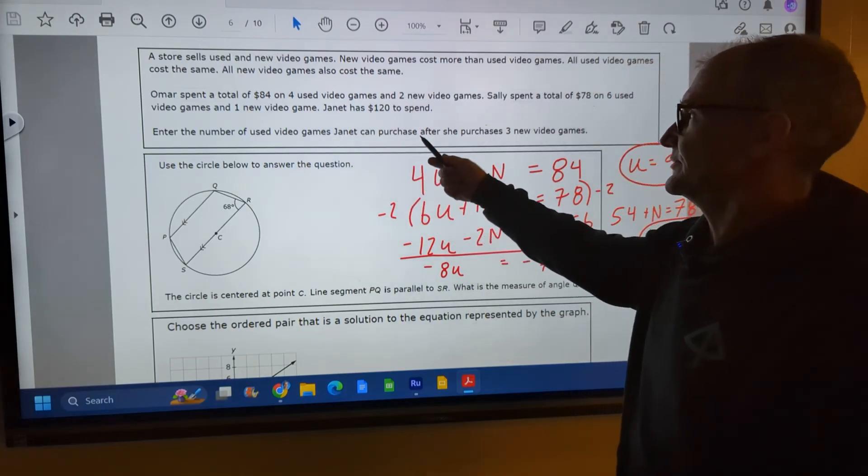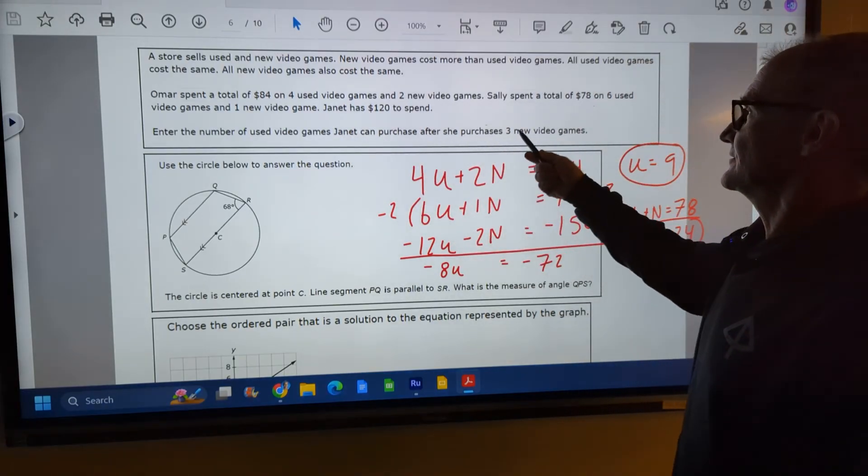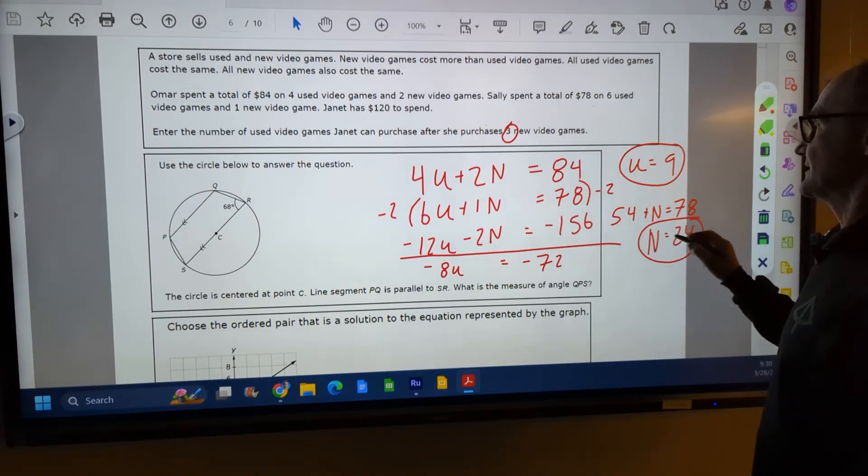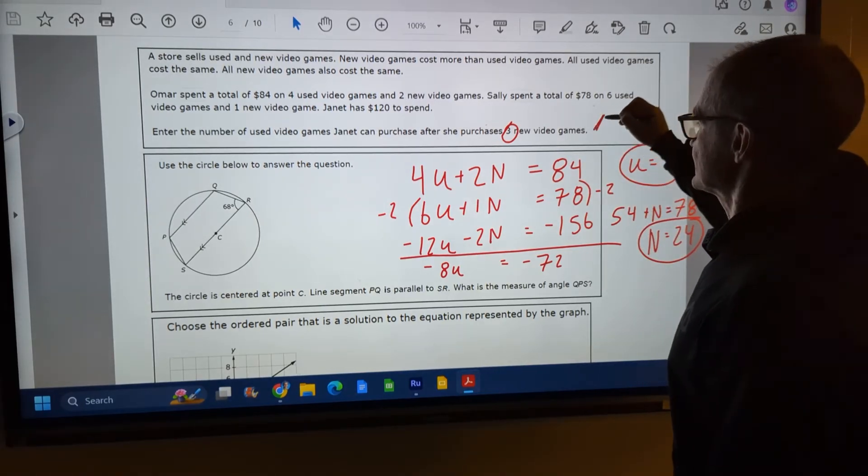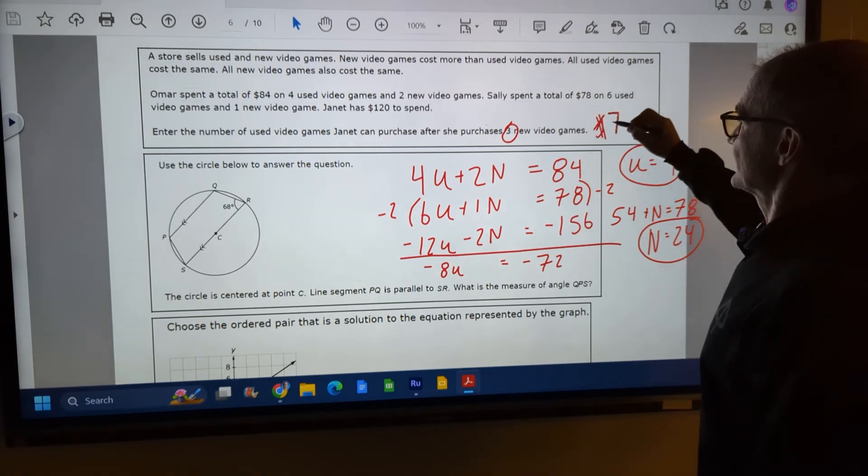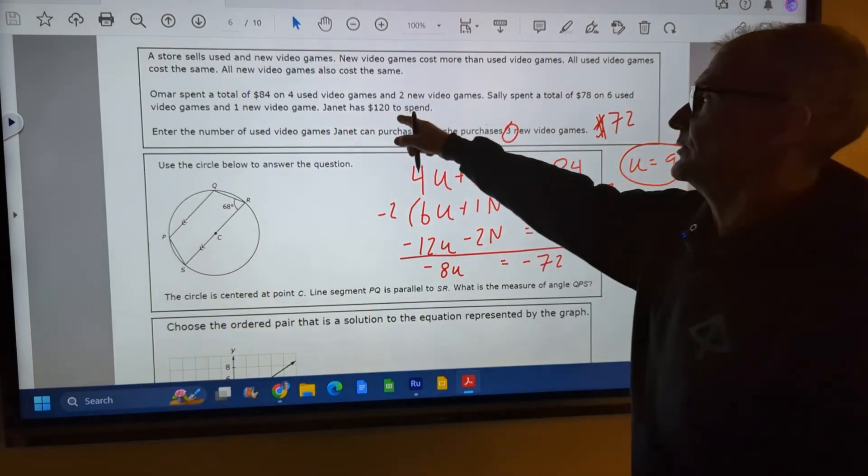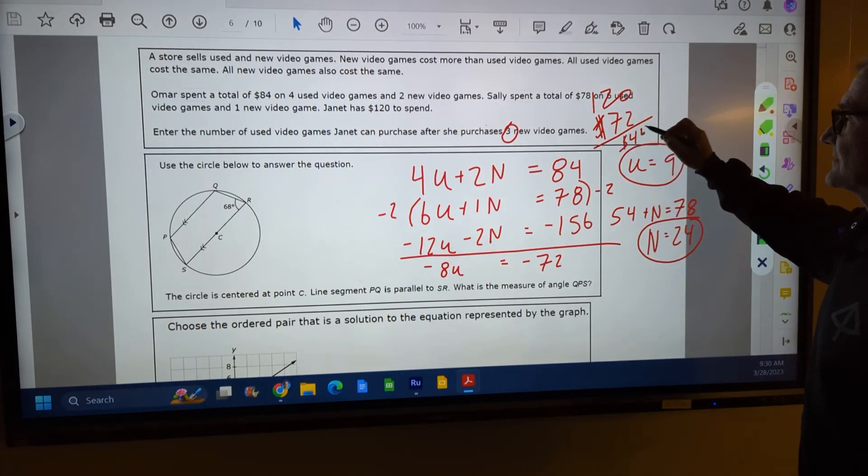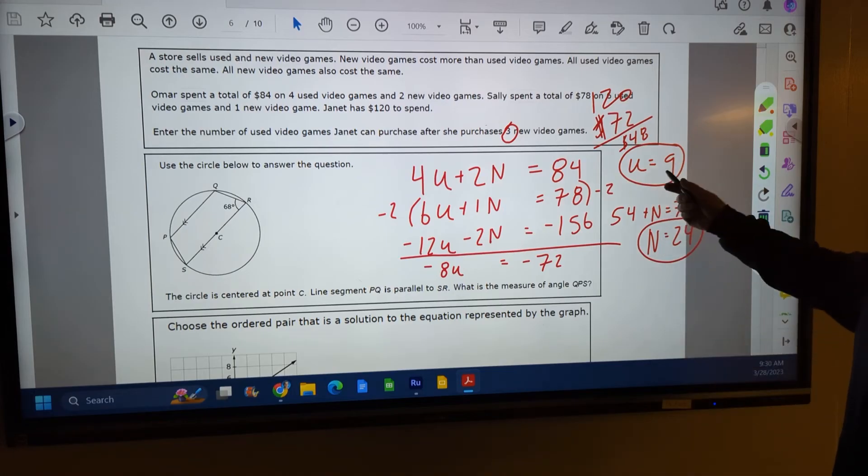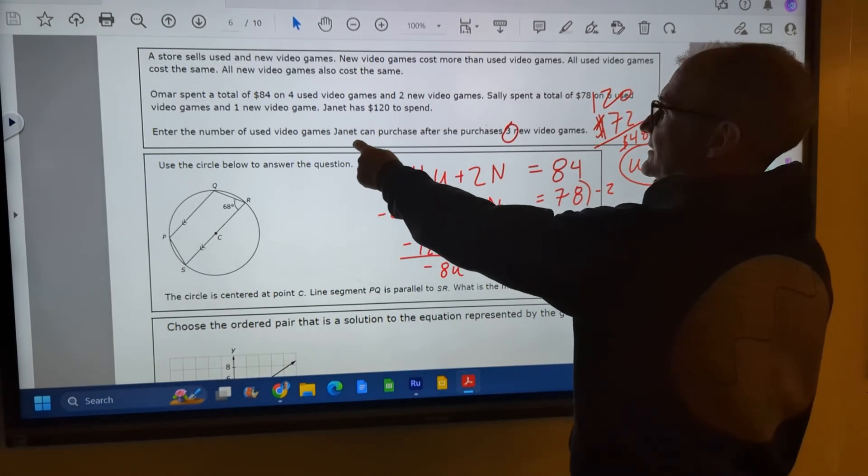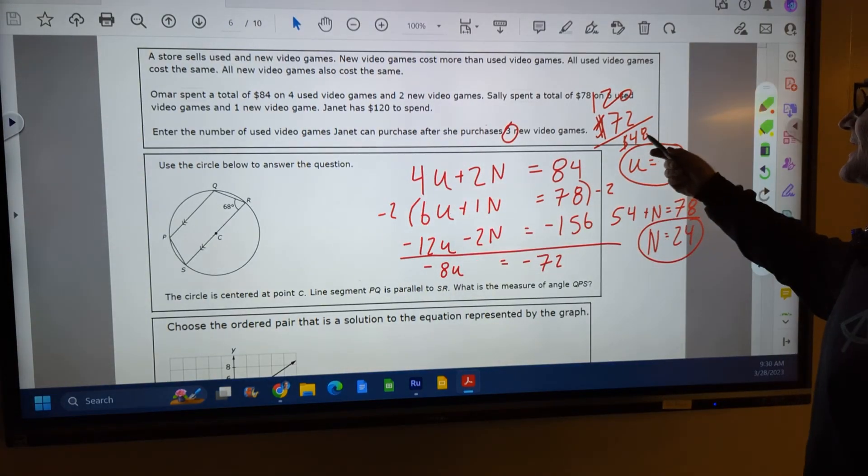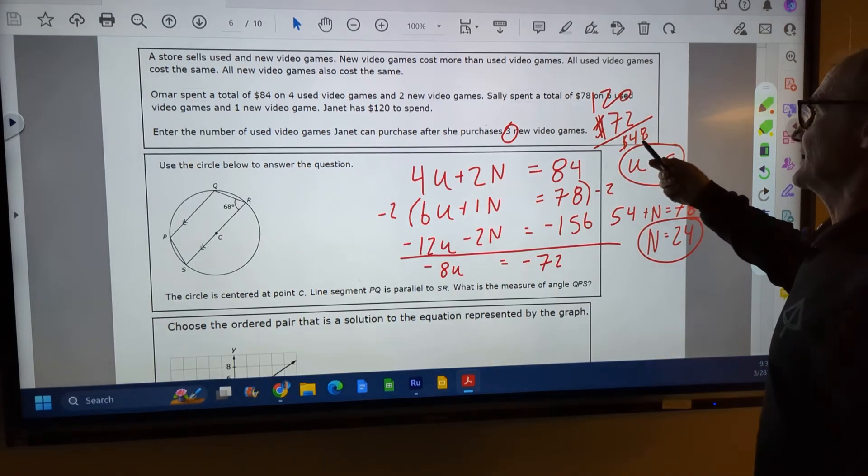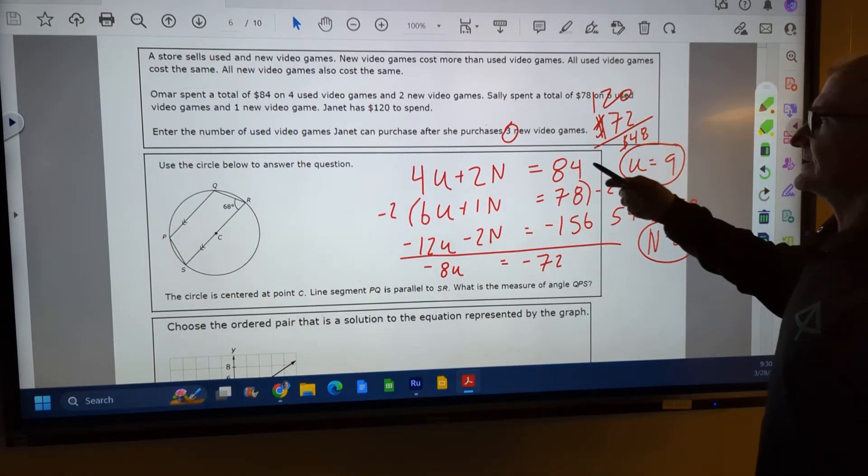Enter the number of used video games Janet can purchase after she purchased three new video games. So she bought three new video games at twenty-four bucks. So twenty-four times three is seventy-two dollars. So she spent seventy-two over one twenty. So I'm gonna take one twenty, minus that seventy-two, and that's gonna give me forty-eight dollars. So she has forty-eight dollars left to buy used video games. Enter the number of used video games she can purchase. So nine does not go into forty-eight evenly. It goes in there five times forty-five with three left over. So she's just gotta take that three dollars home. It's not gonna be an even number. So the correct answer is gonna be five.